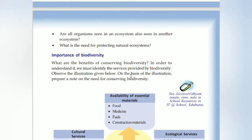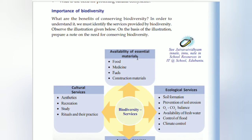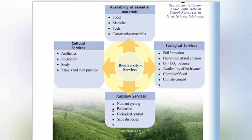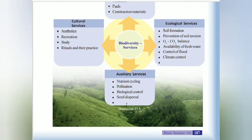The term biodiversity was first used by British environmentalist Walter G. Rosen. What is the importance of biodiversity? The benefits of conserving biodiversity can be understood by identifying the services it provides — food, medicine, fuels, construction materials for cultural services, aesthetics, recreation, study, rituals and practice. Ecological services include soil formation, air balance, oxygen and carbon dioxide balance. Auxiliary services include nutrient cycling, pollination, biological control and seed dispersal.